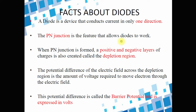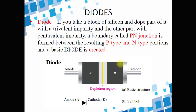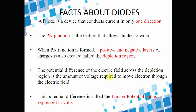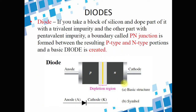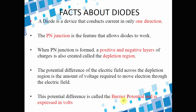The P-N junction is a feature that allows diodes to work. When a P-N junction is formed, positive and negative layers of charges are also created, called the depletion region. There is a positive and negative layer of charges due to the P-type and N-type material. This P-N junction allows the diode to operate. The potential difference of the electric field across the depletion region is the amount of voltage required to move electrons through the electric field, and that potential difference is what we call the barrier potential, expressed in volts.